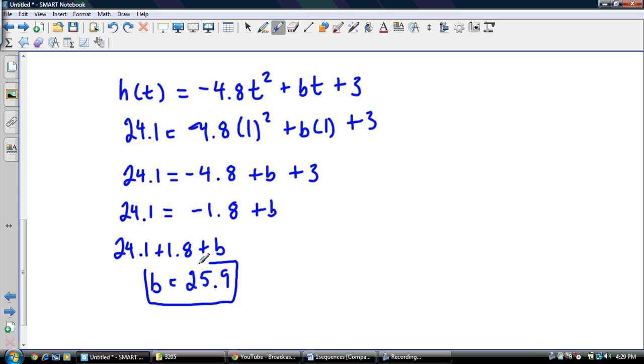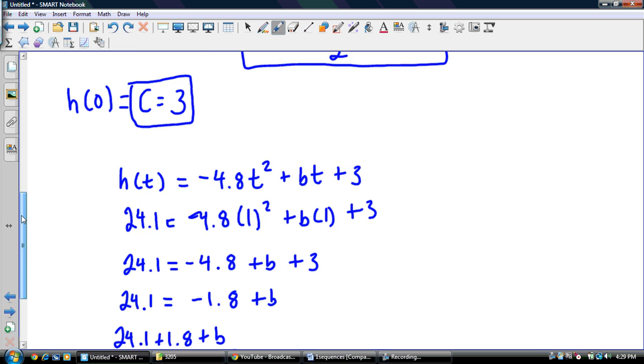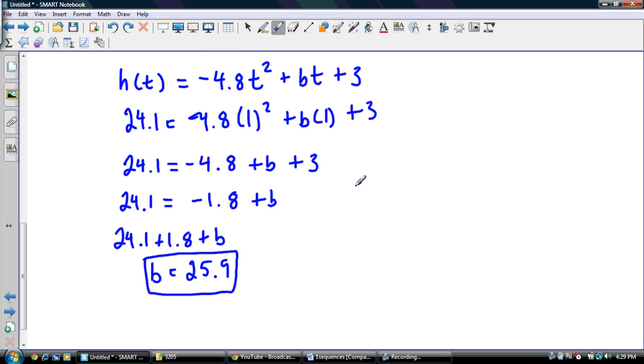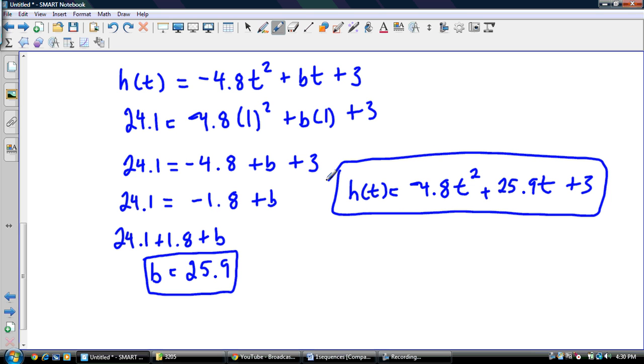All righty, so we've got 25.9. So I have my A, my B, and my C. So now all I'll do is go back to this guy and fill in where B is too. So h of t is equal to negative 4.8t squared plus 25.9t plus 3. And there we go. That's our answer.